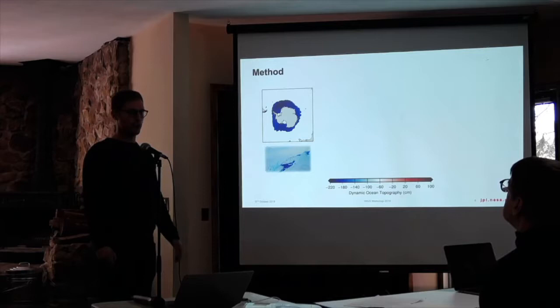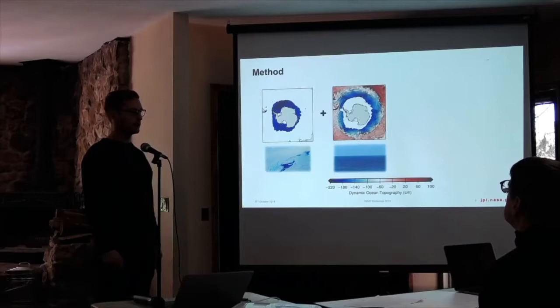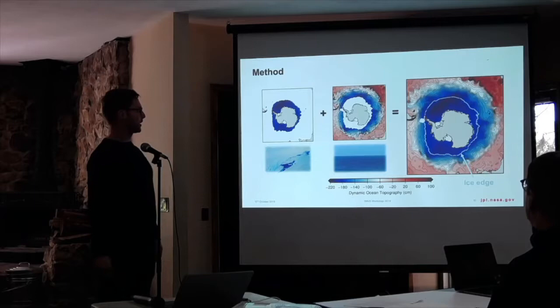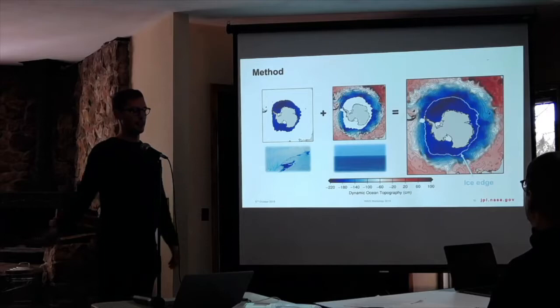We take the regular radar altimetry record from the open ocean, and then by stitching those together carefully, we can get basin-wide monthly composites of sea level. This is dynamic topography. I've put on the ice edge here for this month, and you can see we get a nice continuous look at sea level underneath the sea ice cover.